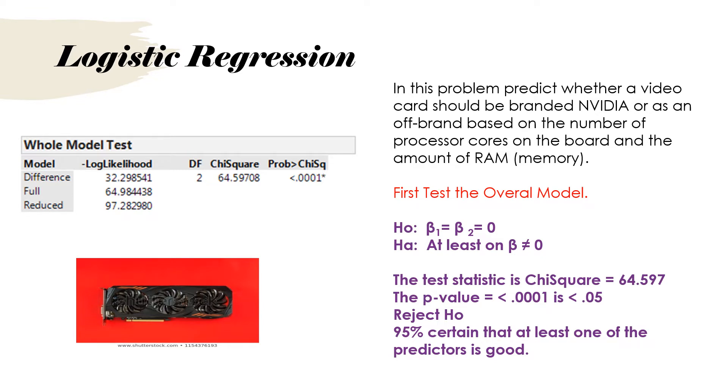So we're going to start out by testing the overall model. H0 is going to say beta1 equals beta2 equals zero. HA, at least one beta is not equal to zero.